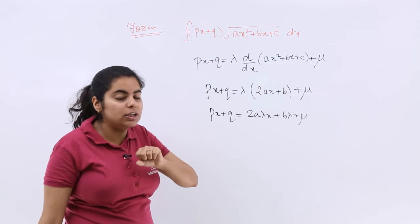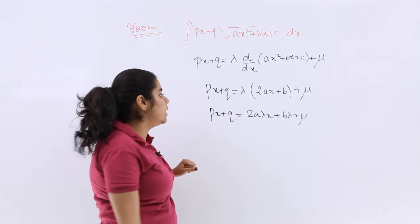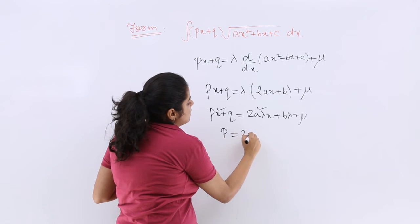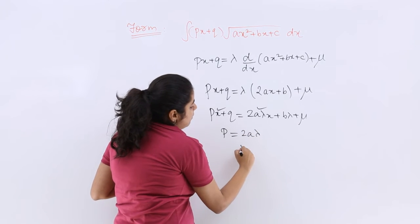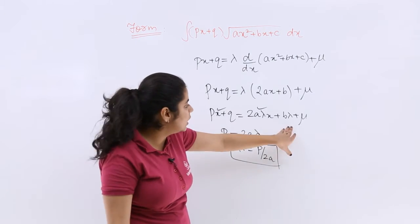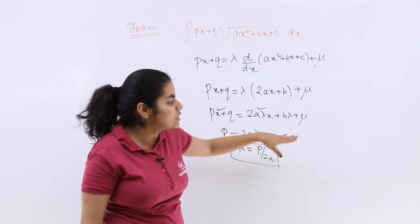So in order to find lambda and mu, let me compare. So Px, here also something in x. So lambda is equal to P upon 2a.